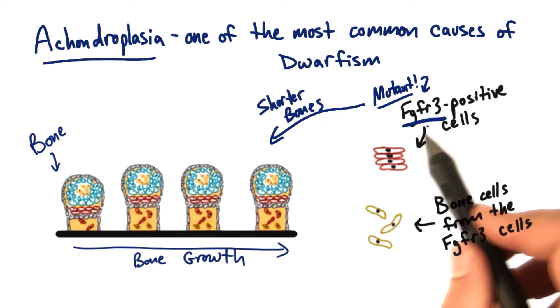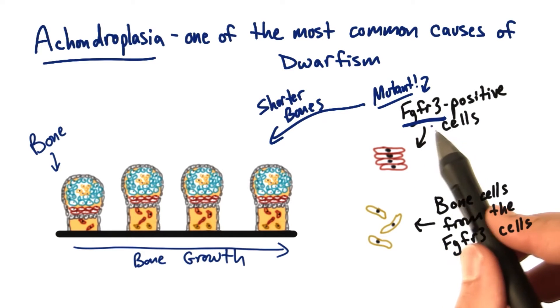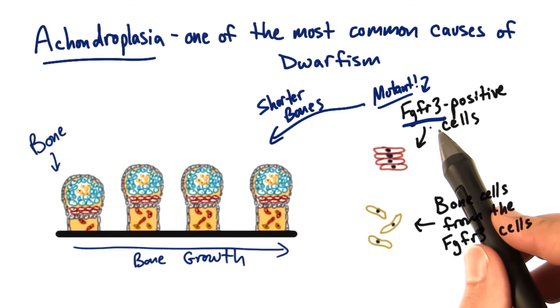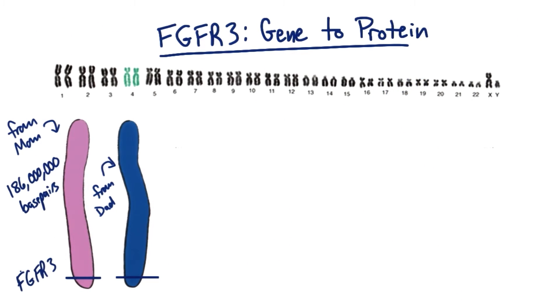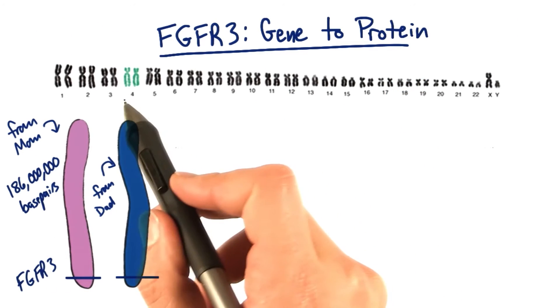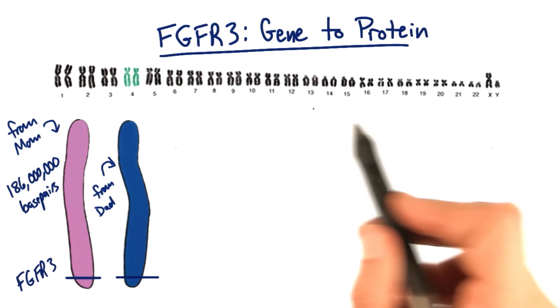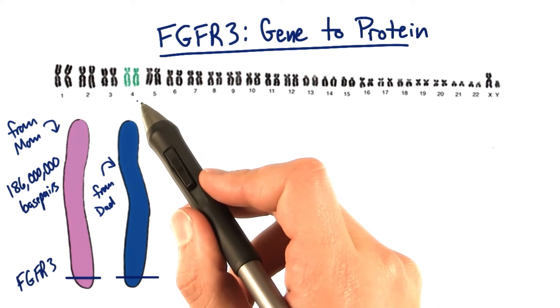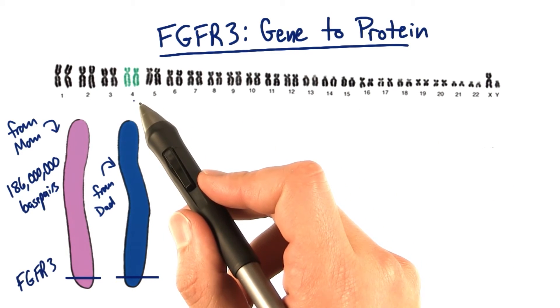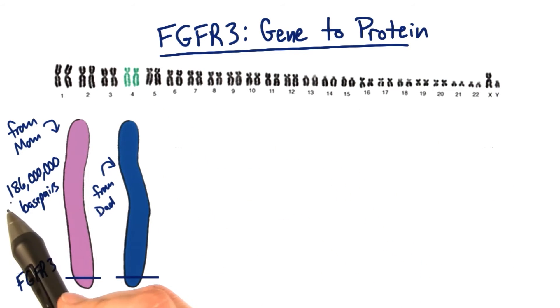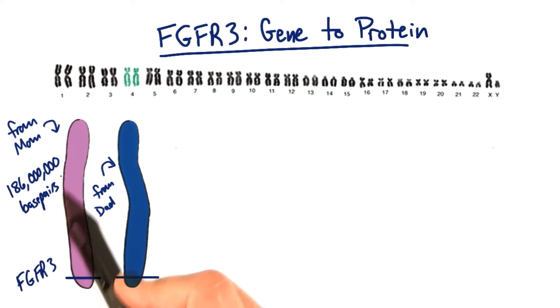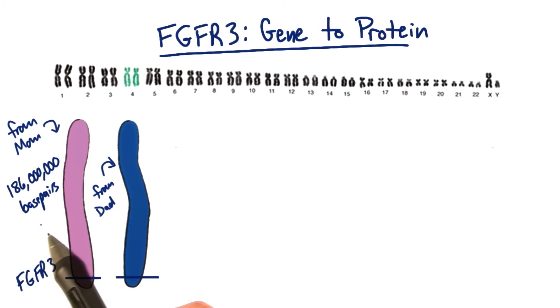Let's learn a bit more about this FGFR3 protein. The FGFR3 gene can be found on chromosome four in the human genome. Chromosome four has 186 million base pairs in it.